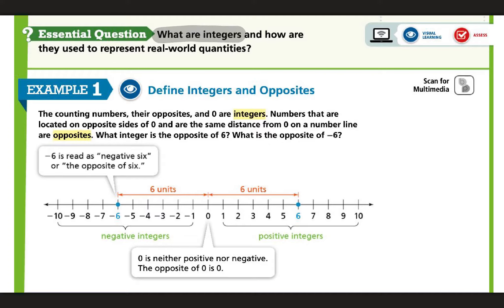So that first question here is what are integers? Well, we can see here the counting numbers, their opposites, and zero are integers. So counting numbers one, two, three, four, five, their opposites, which we'll get into, and zero are all integers. Numbers that are located on the opposite sides of zero and are the same distance from zero on a number line are opposites.